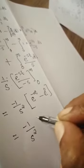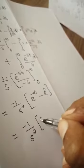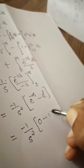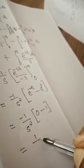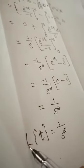This equals minus 1 by s squared into e raised to minus infinity, which is 0, minus e raised to 0, which is 1. So this equals minus 1 by s squared into minus 1, which gives 1 by s squared. Therefore, the Laplace transform of t is 1 by s squared.